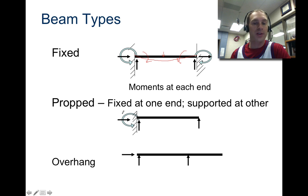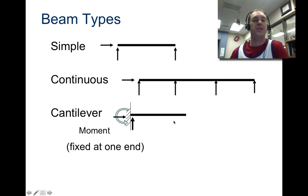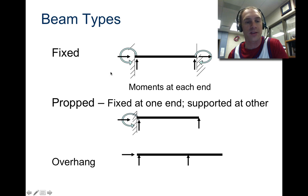If it's propped or fixed at one end and supported at the other, then you just have one moment on this end here. And then another option is just an overhang. So these are six different options of beam types: simple, continuous, cantilever, and then fixed, propped, and overhang. Taking a screenshot of these is probably a good idea.